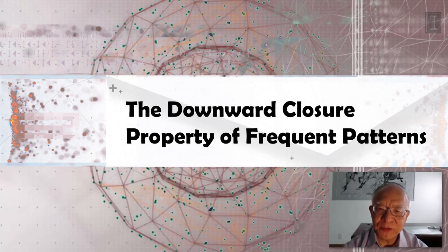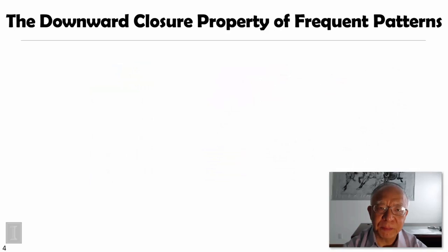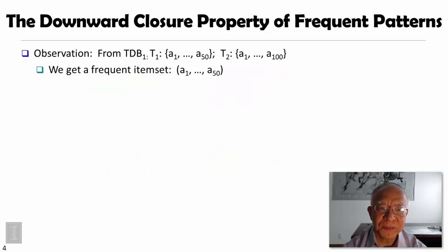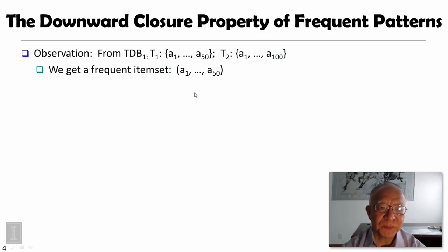We are going to introduce a very important property of frequent patterns, which is called the downward closure property of frequent patterns. Let's look at this simple transaction database, Tdb1. It contains only two transactions, T1 and T2.